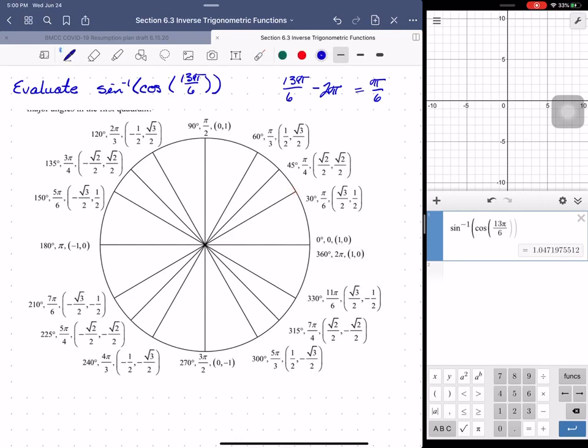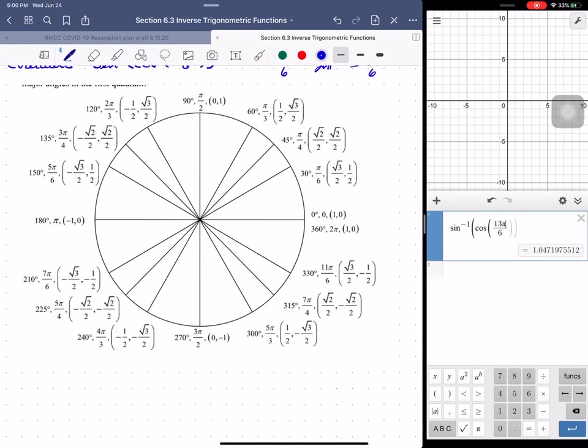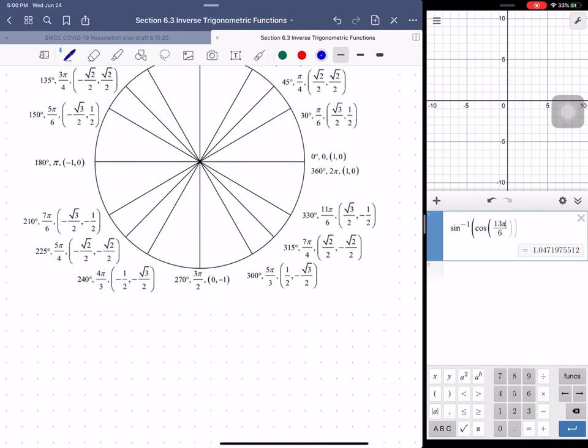So what we are, so the inverse sine of the cosine of 13 pi over 6 is going to be the same thing as the inverse sine of the cosine of pi over 6.